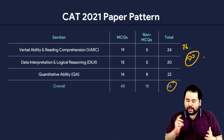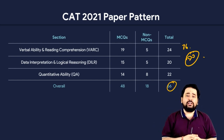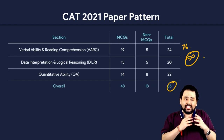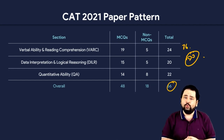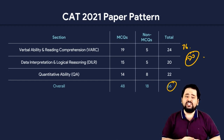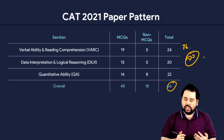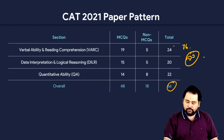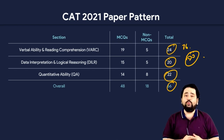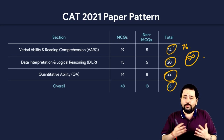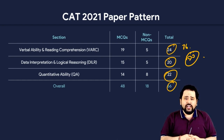My expectation for CAT 2022 is that they'll still look at it from the perspective of a two-hour paper, which means 66 questions is what we can expect. The breakup last year was 24 in Verbal, 20 in DILR, and 22 in Quant.